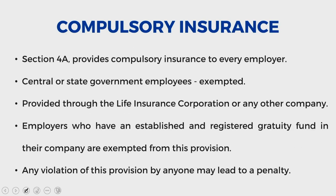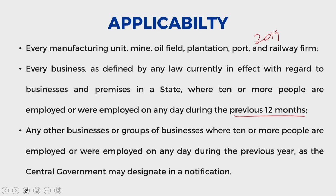Now let us look into the compulsory insurance part. The bill has been passed by both houses, it has become an act with the assent of the President and has been notified by the government. When you look into the major impact, it will categorically ensure harmony amongst employees in the private sector and in public sector undertakings, including autonomous organizations under government not covered under the CCS or pension rules. These employees will be entitled to receive a higher amount of gratuity at par with their counterparts in the government sector.